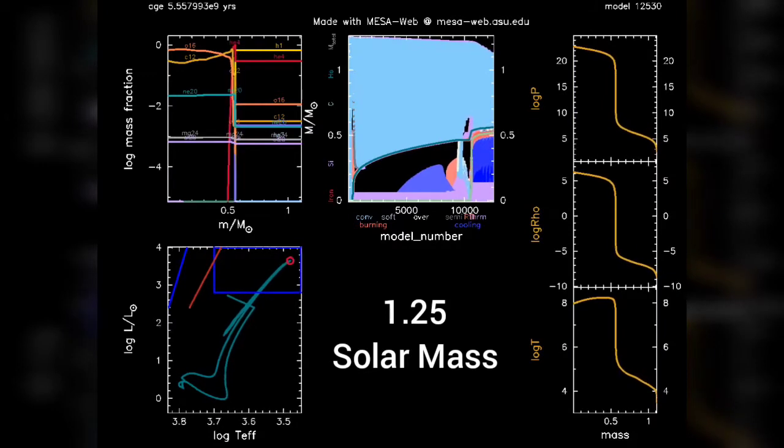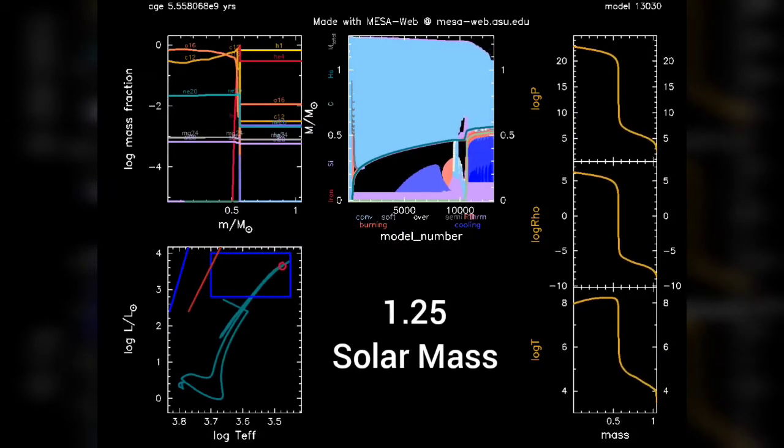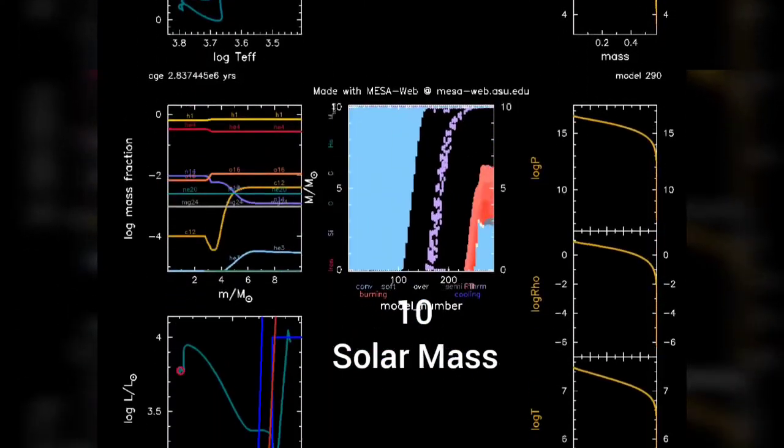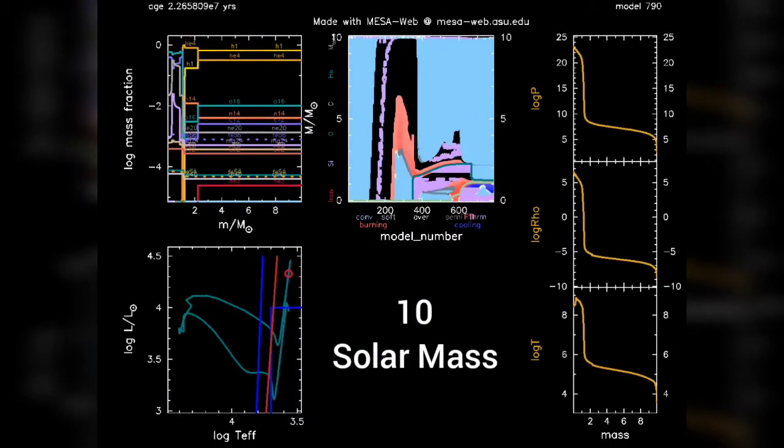The graphs on the right, there are three graphs which talk about the profiles of pressure, density, and temperature as a function of Lagrangian mass coordinate or the distance from the center.